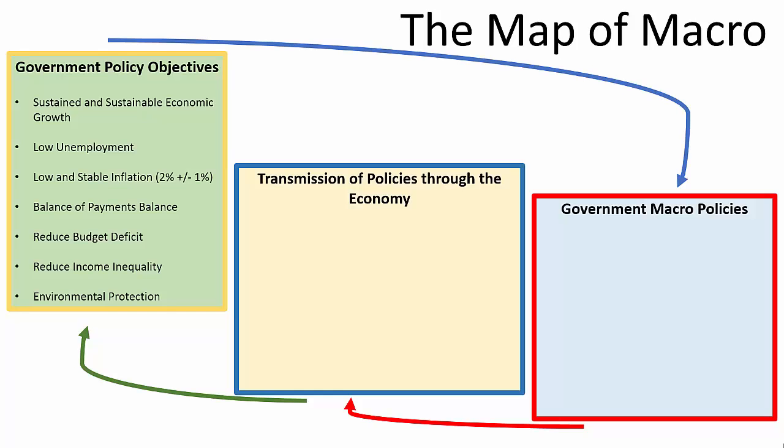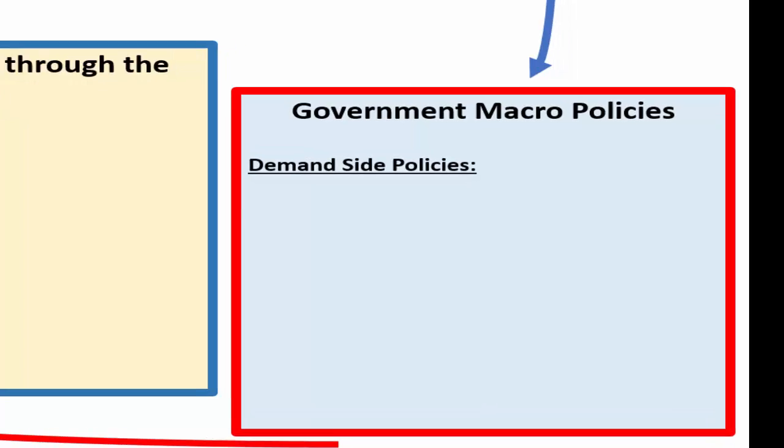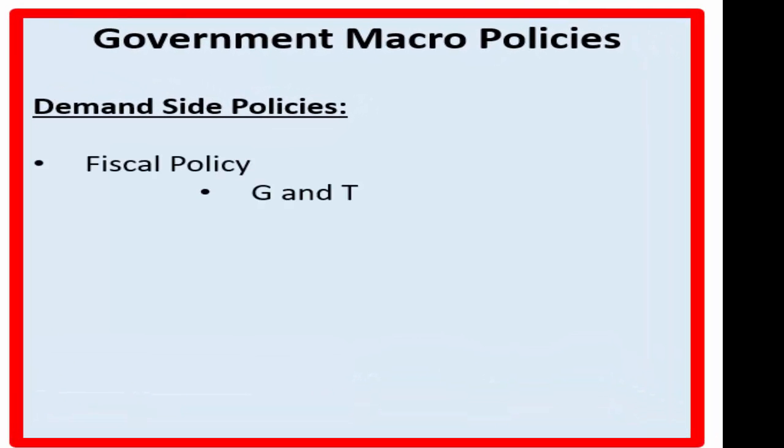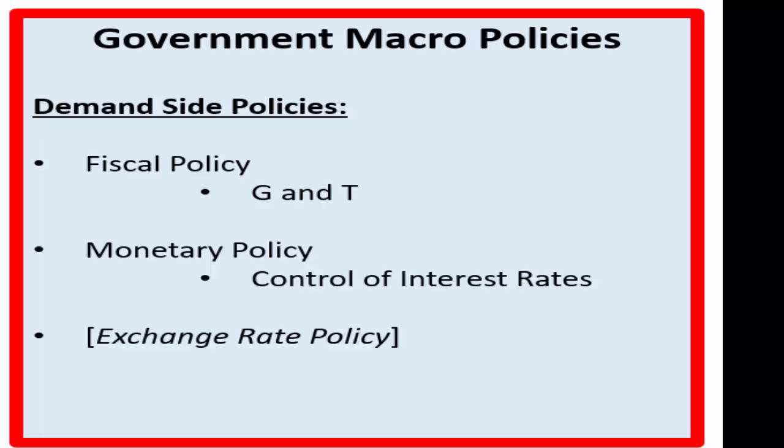So the government's policies then that the government manipulates to achieve policy objectives are split into demand side and supply side policies. The demand side policies are fiscal policy, which involves the altering of government spending and government tax levels. That's what G and T stand for. The second policy is monetary policy, which is the control of interest rates. So the government sets an inflation target of 2% and then it gives control of interest rates to the Bank of England, who then tries to meet the government's macroeconomic objective of 2% inflation per year. There's also exchange rate policy, which is in italics because there isn't necessarily a direct government policy to control the exchange rate because we have a freely floating exchange rate determined by market forces, but monetary policy has exchange rate impact.